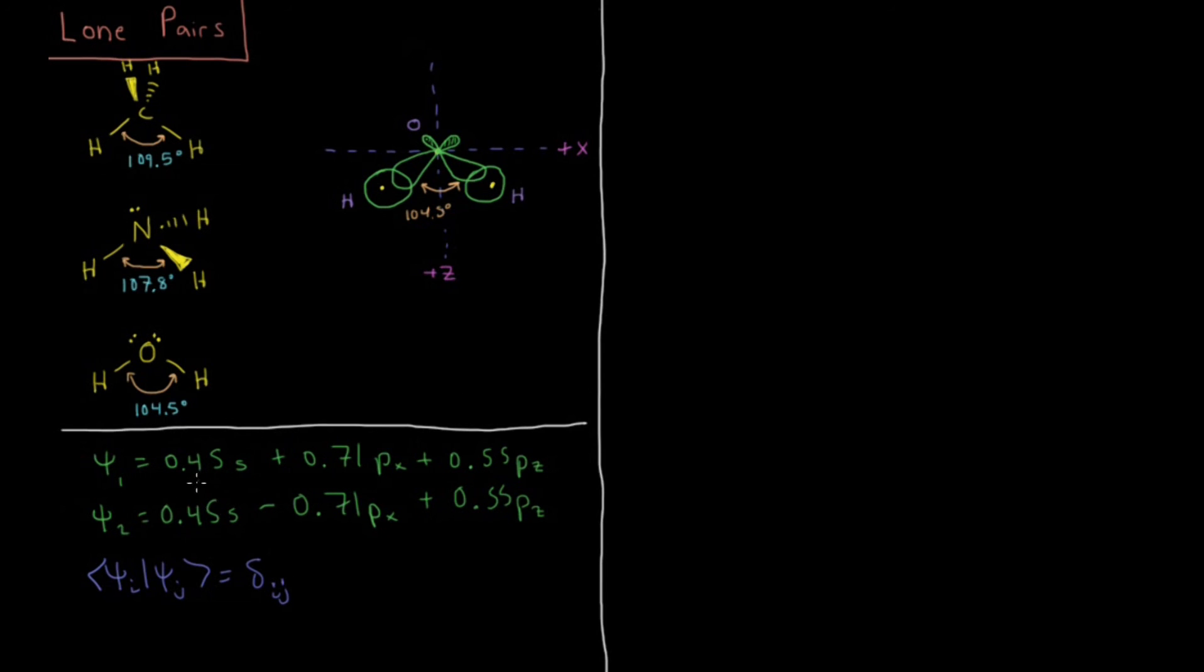So how much of this is s, and how much of it is p? Well, what we have to do is calculate the s and the p character from the orbital coefficients. As I have been saying on previous videos, it's to take the coefficient and square it. That's the fraction of it, that's s. Take the coefficient of px, pz, py, square those, and then sum them up.